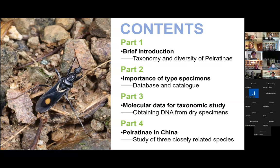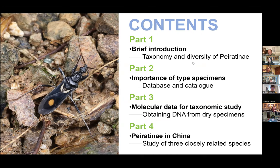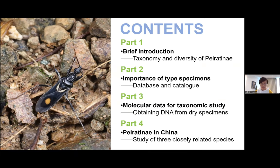My talk today includes four parts. First is the introduction of my research taxa — the taxonomy and diversity of Peiratinae. The second part is the most important materials for us: type specimens, the database and catalog. The third part is about obtaining DNA from dry specimens and the use of molecular data. Last, I would like to show you a study of three closely related species distributed in China.